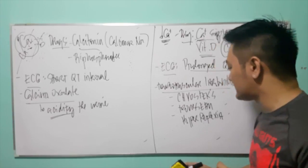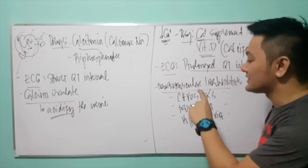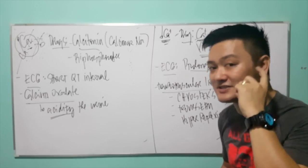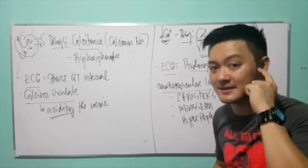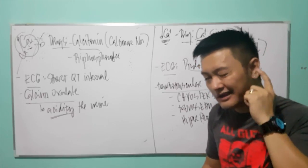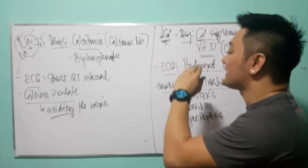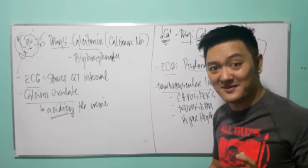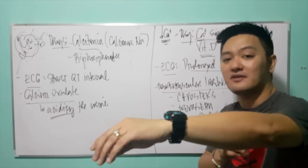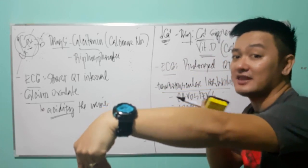To check for Chvostek sign, tap two to three centimeters anterior to your earlobe. That side of the face will have twitching or spasm — a positive Chvostek sign indicating hypocalcemia. For Trousseau sign — also called carpal pedal spasm — when you inflate the BP cuff, the hand of the patient flexes and the digits go into spasm.